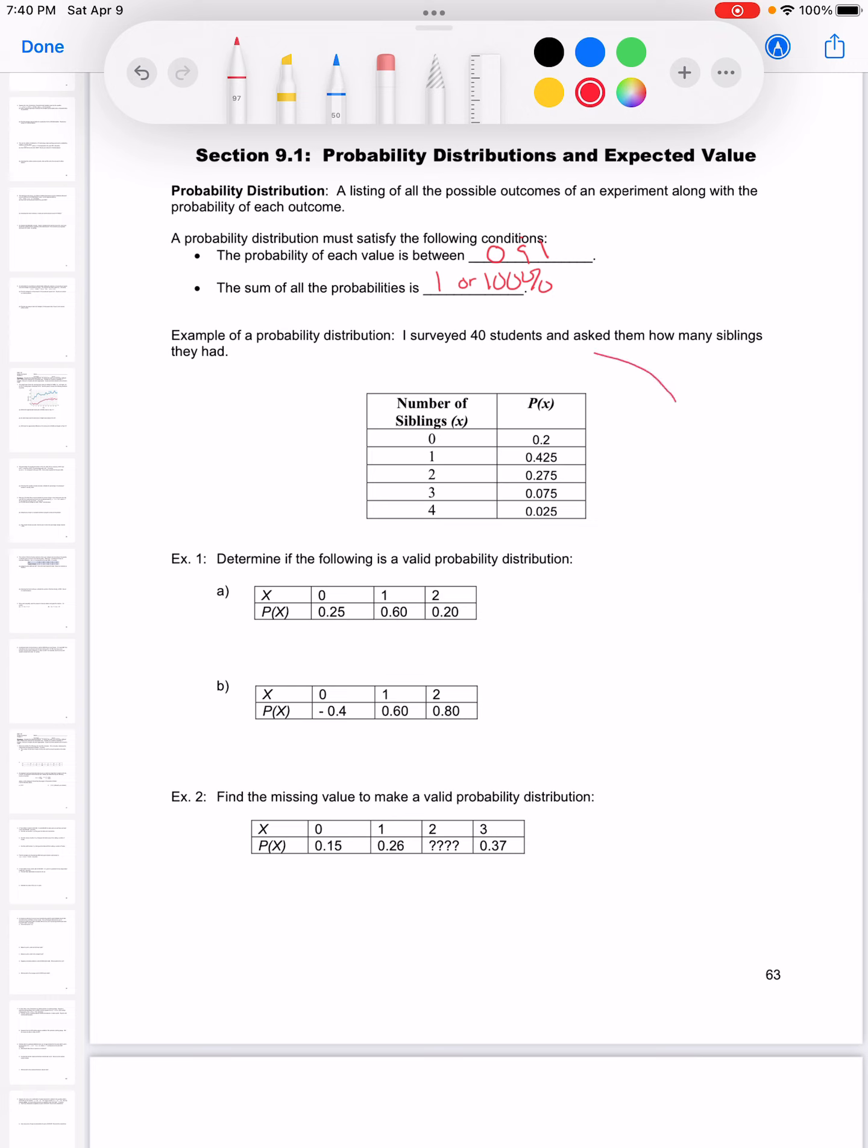So what I have here in the chart is a probability distribution where x is going to be our number of siblings we might have and then the probability of that happening.